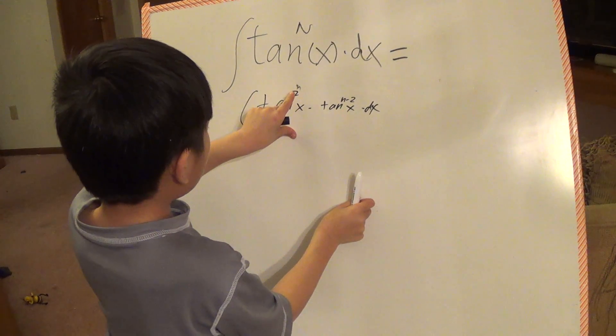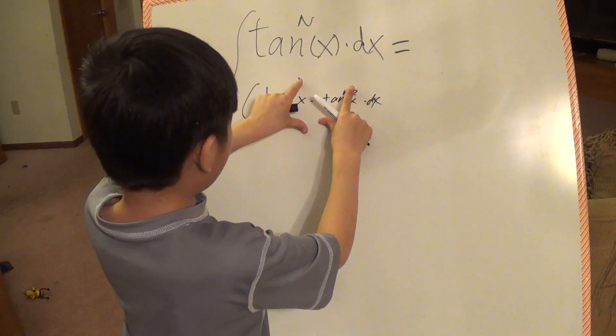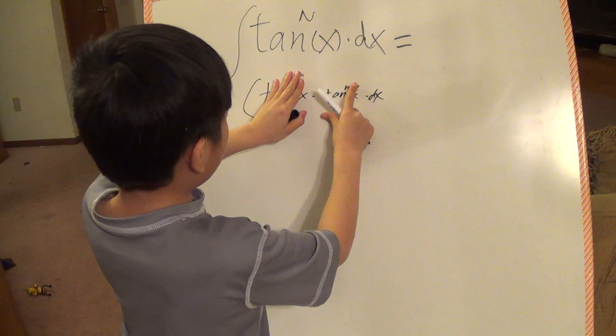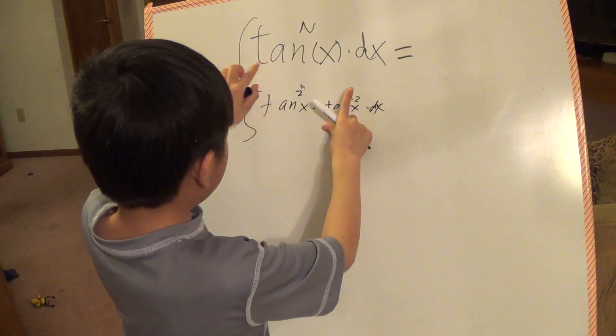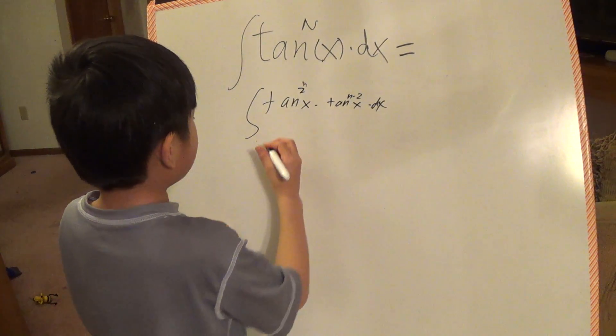See, n minus 2 subtract 2 is 0, so it would be that, and this tangent would be gone, see? This is same as that, so then let's get to our next step.